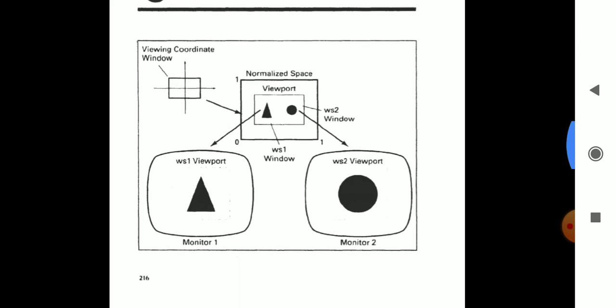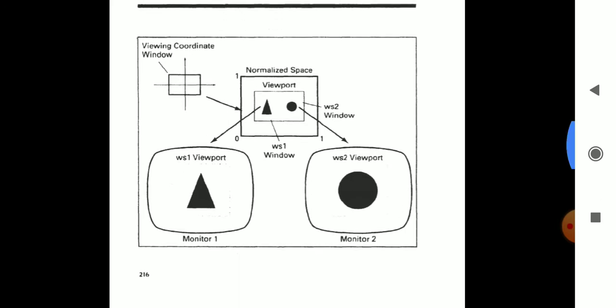Now look at the block diagram, these are the two outputs, one is triangle, another one is circle. How these outputs are viewed through a computer, that logic we are going to discuss in module 3.